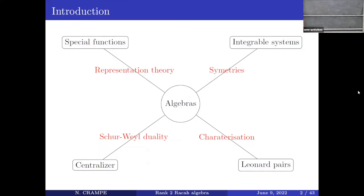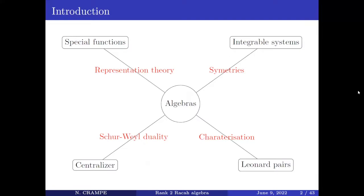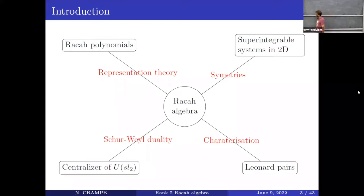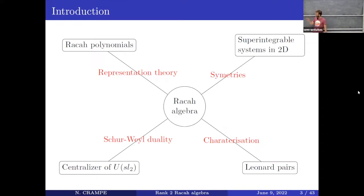I learned something about integrable systems, constructing them, and after that two things interested me: special functions and Leonard pairs. As just introduced, the algebra allows - as he explained - a characterization of Leonard pairs. In this talk, my subtitle is 'Racah duality.' I chose one particular algebra I like: the Racah algebra. Not many people discuss it, but it's really the q equal to one limit of the Askey-Wilson algebra we saw at different places during these three weeks. It's a particular limit.